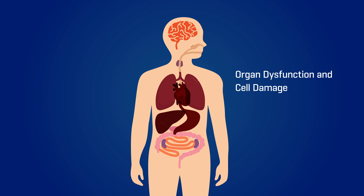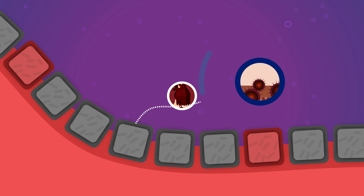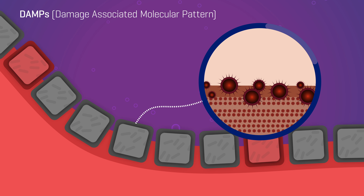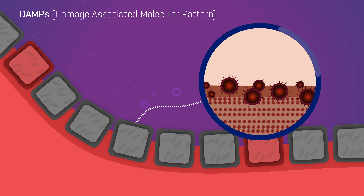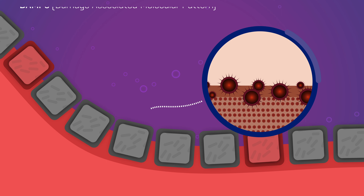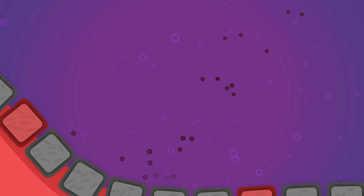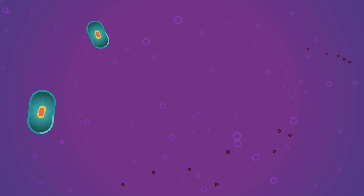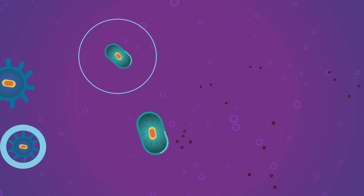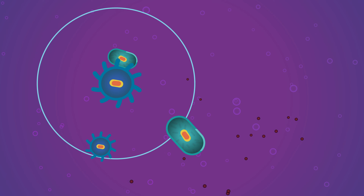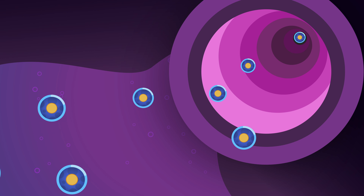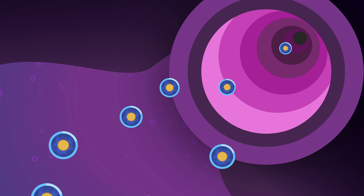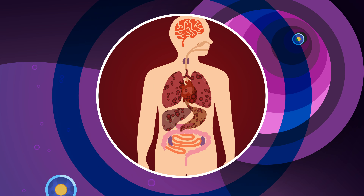On the surface of the damaged cell, there are DAMPs — damage-associated molecular patterns. When they are released into the circulation, they are recognised by the host immune cell, enhancing cytokine production and fuelling the uncontrolled inflammatory process.